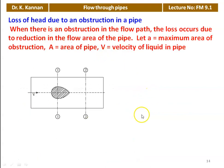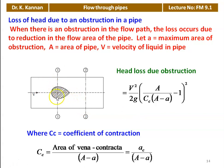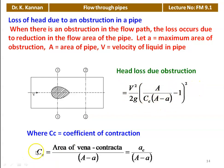Loss of head due to obstruction in the flow: when an obstruction exists in the pipeline, loss occurs due to the reduction in flow area. Let 'a' be the maximum area of the obstruction and A the area of the pipe. The head loss due to obstruction = V²/2g · [A/(CC·(A − a)) − 1]², where CC is the coefficient of contraction = AC/(A − a), the area of the vena contracta divided by (A − a).